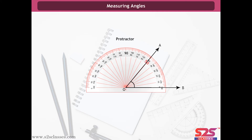Now let us measure angle AOB. Place the protractor horizontally over the line OB in such a way that O and M coincide with each other. We can see that the side OA falls on the mark of 50 degrees. So the angle AOB measures 50 degrees.